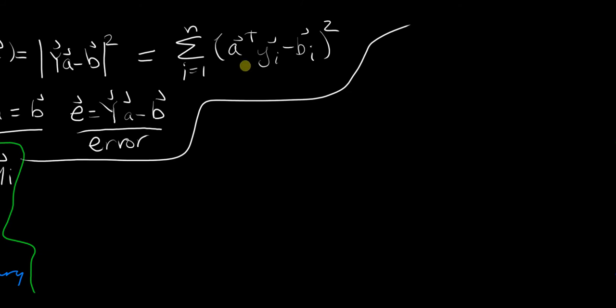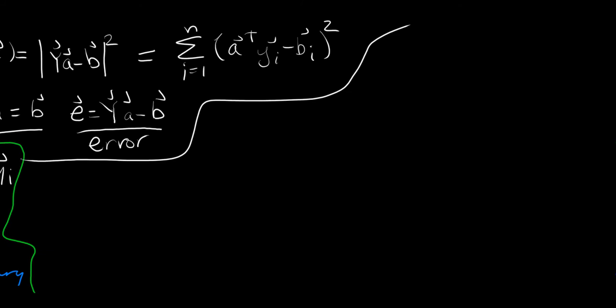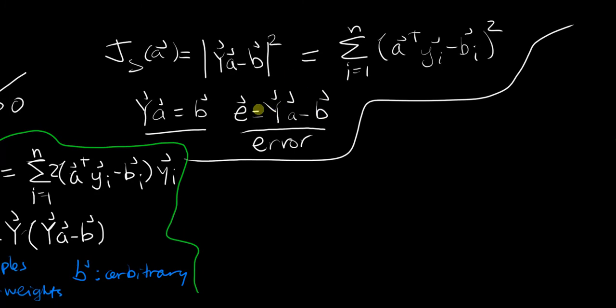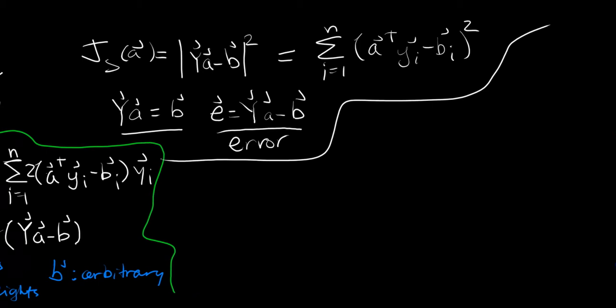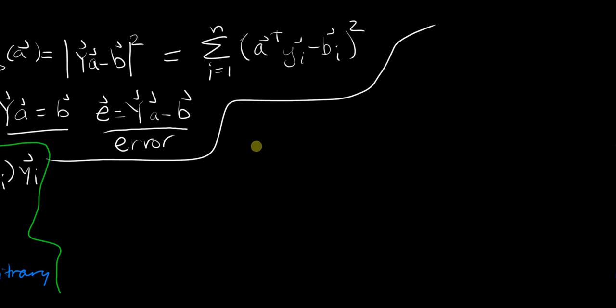So the objective again now that you see that this function represents error is that we want to minimize the error. We want to minimize the magnitude of the error. So to do that, let's set gradient of j of s equal to zero, which is the same as setting the definition of it equal to zero.